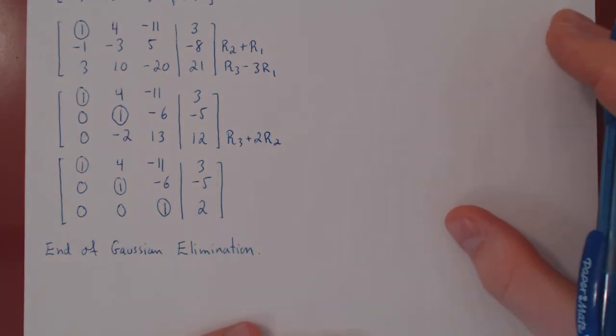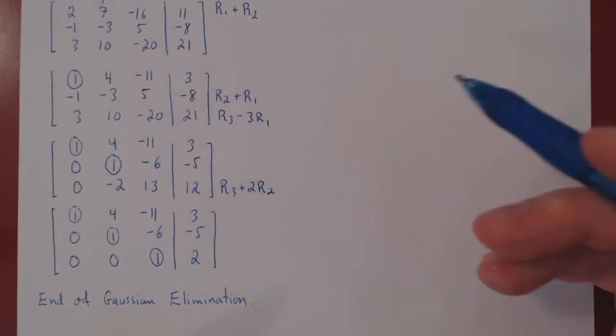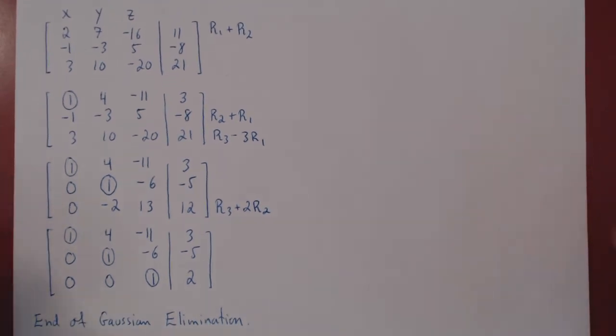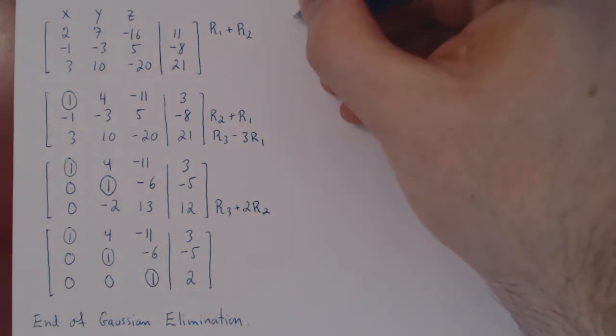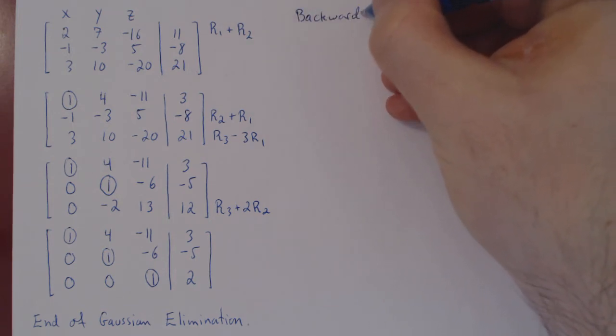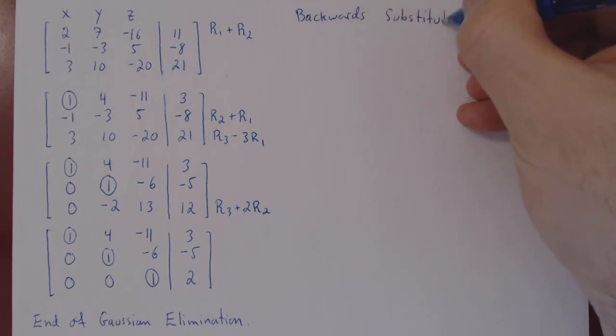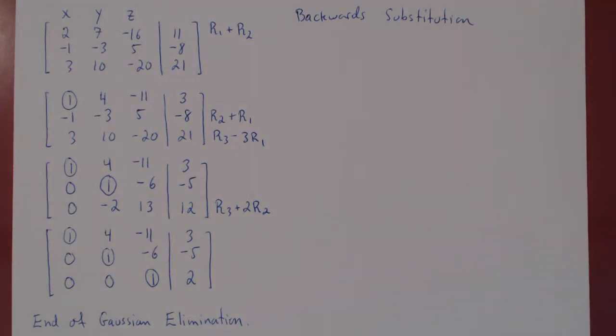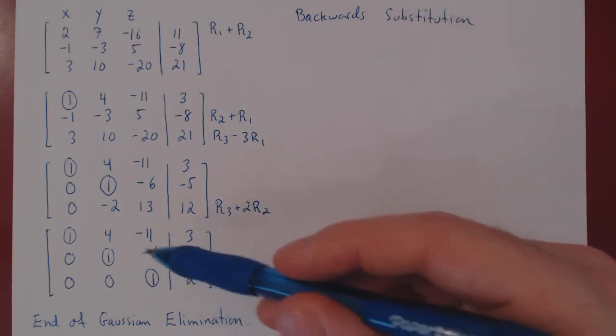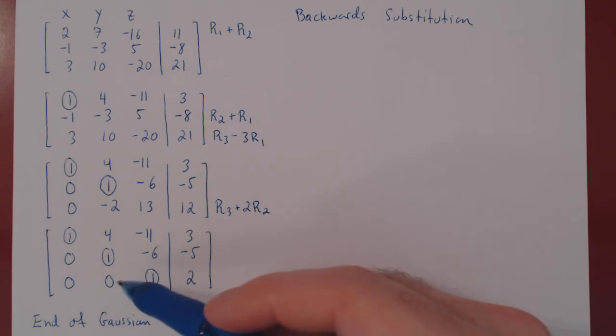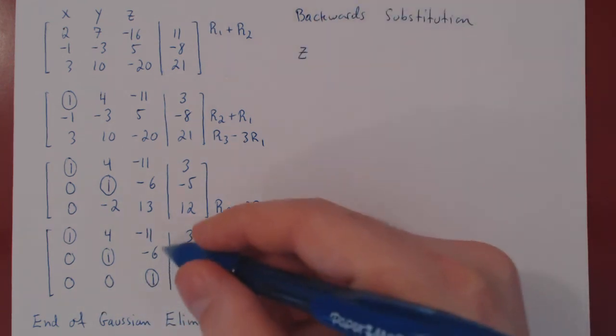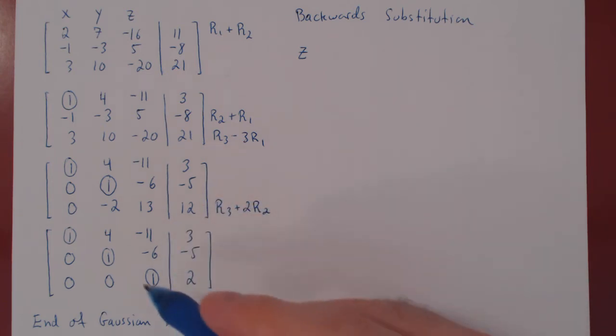As always, we ask ourselves the question, are there any free variables? Are there variables that don't have leading 1's? The answer here is no. We only have 3 variables: X, Y, Z. They each one possess a leading 1, which implies once again that we have a unique solution. Every time the system has a unique solution, meaning all variables are leading variables, we always use backwards substitution. Well again, the name gives it away. We start with the very last variable, very last row, and we work our way up. If you look at the bottom row, this leading 1 will allow us to solve for Z. As it says, 0X plus 0Y, which is 0, plus 1 times Z, so it's just Z. The vertical bar again replaces the equal sign, so we get Z equals 2.